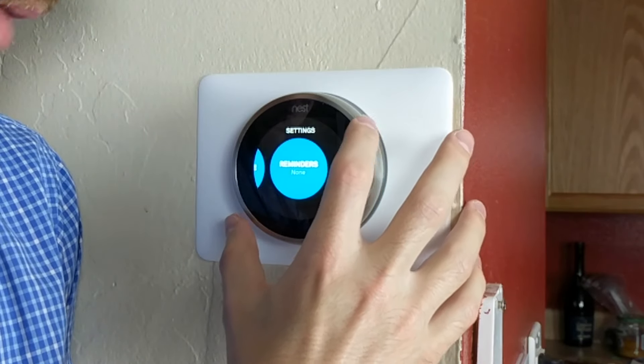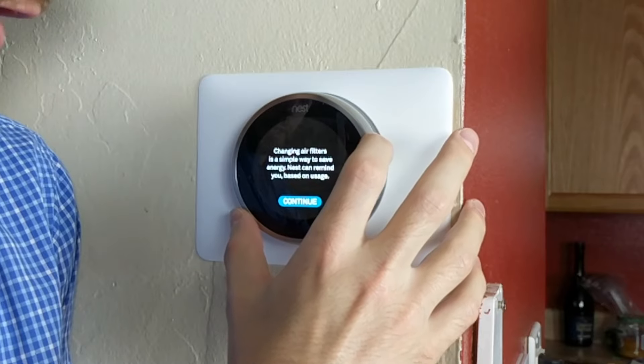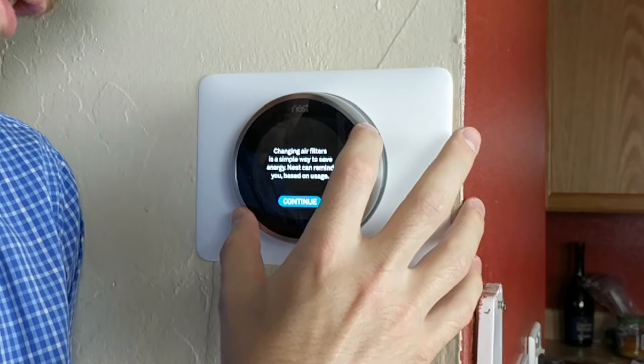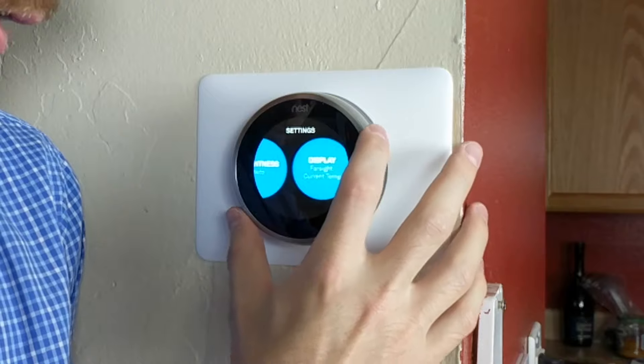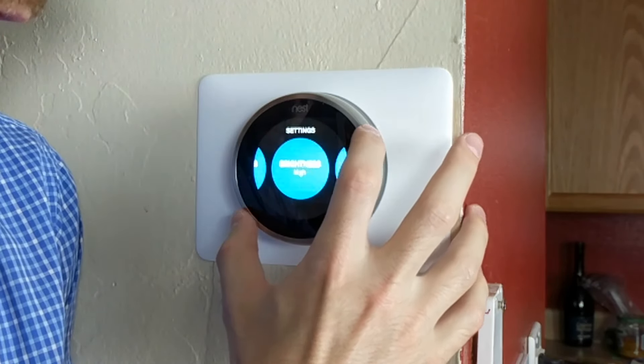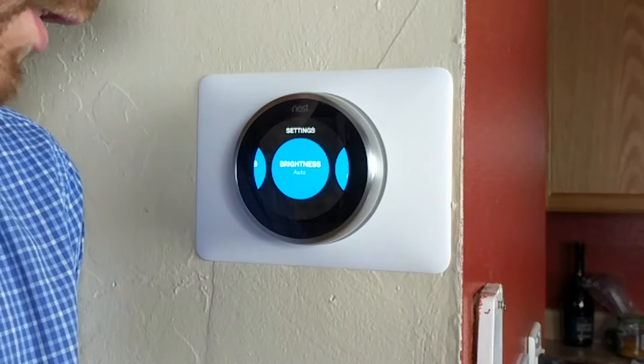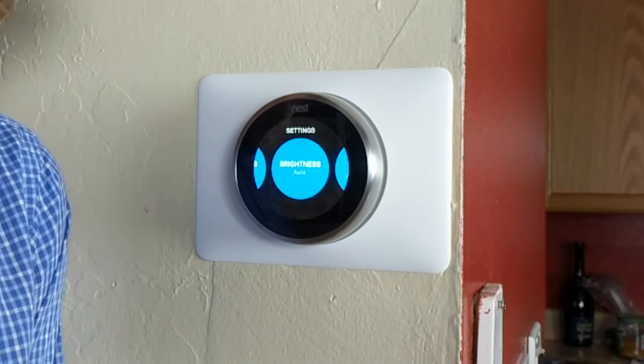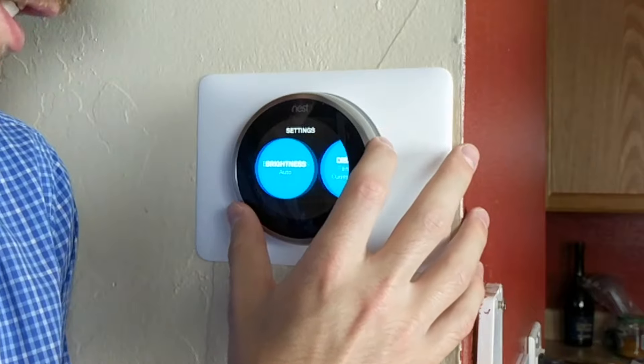Then you have other settings like reminders. You can set the thermostat to remind you to do things like change the air filter in your heaters. We're not going to do that. You have different brightness for the display: auto, low, medium, high. We have it to auto because that basically just changes the display brightness depending on how bright the room is.